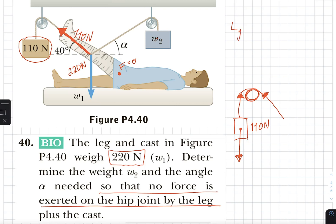So left y is going to be 110 sine of 40 degrees. Remember, that is where we see. So that is sine. And then Lx is going to be 110 cosine of 40 degrees.